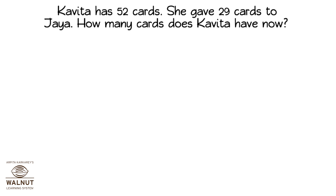Kavita has 52 cards. She gave 29 cards to Jaya. How many cards does Kavita have now? What do we have to do here? We have to find out how many cards she has left. From 52 cards, she has given away 29 cards. We have to do 52 minus 29.